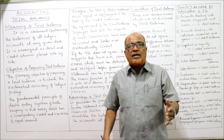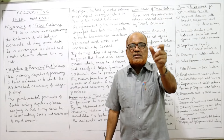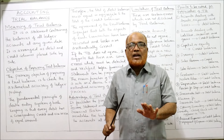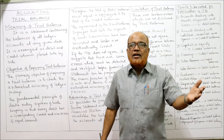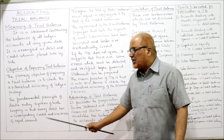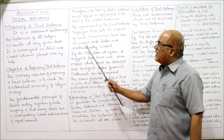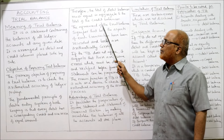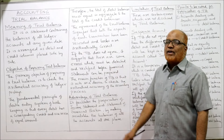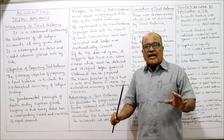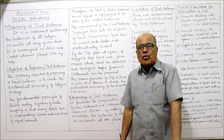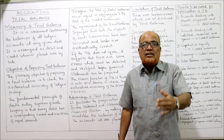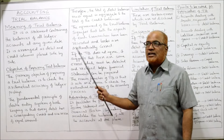In the trial balance we take all debits in one column and all credits in another column. If there are no errors in ledger posting, then the total of debit and credit will be equal. The total of debit balances must equal the total of credit balances. If the trial balance agrees — meaning both sides are equal — it signifies that there are no errors in the ledger posting.